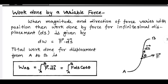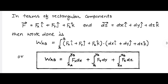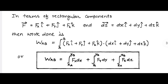To find the total work done when an object is displaced from point A to point B under a variable force, we take the integral from A to B. We can also express work done in terms of rectangular components by resolving both force and displacement into their rectangular components, then integrating. The total work W_AB is the sum of work done along the x, y, and z axes. Remember: there is no term called instantaneous work — work is defined for an interval or displacement. Work is independent of time.